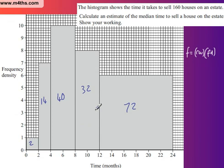Now if you think we've got 160 houses, we want the median. The median is going to be taken on the 80th house. Up to here, so this one, this one and this one, we've got 56 in total. So essentially we're up to 8 months.